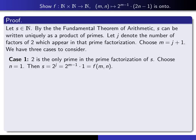Case 1 is the case where 2 is the only prime that appears in the prime factorization of s. In other words, s is equal to 2^j. So in that case, I'm going to choose my number n to be 1. So now I have m. m is already chosen. m is equal to j plus 1. So we've got our m. I'm taking n to be 1. And then just observe that s is 2^j, which is the same as 2^(m-1) times 1, and that's exactly f(m,n). So that takes care of case 1.